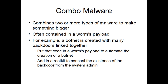Combo malware is where you combine two or more types to make something bigger and nastier. You might use a worm to affect a whole bunch of computers with a backdoor, and with that backdoor create a botnet. Get enough botnets and you can do an awful lot of things. You might also add a rootkit to hide that backdoor and botnet from the admin of the system.